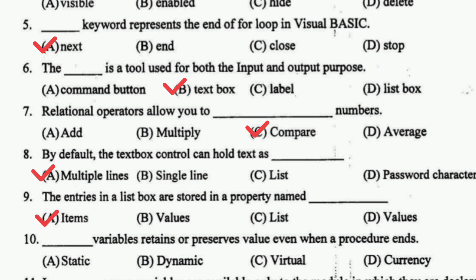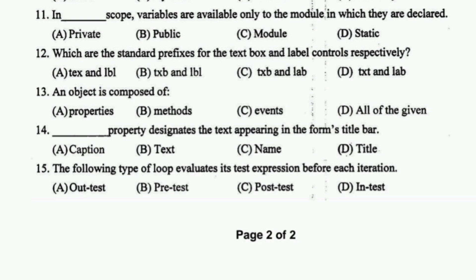A static variable retains or preserves its value even when a procedure ends. In private scope, variables are available only to the module in which they are declared. The standard prefixes for textbox and label controls respectively are txb and lbl.